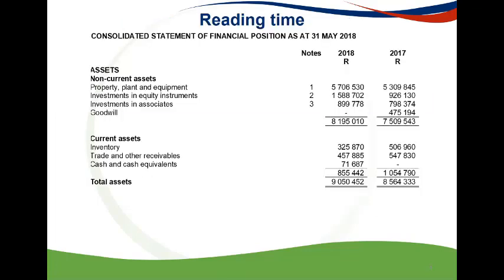During reading time, it is important to analyze the financials given before rushing through to the typed information. First, look at the asset section of the financials. Divide the line items to assign under which activity on the cash flow they would be disclosed. Remember, even though this seems easy, students tend to confuse line items as you may become distracted when writing time starts. Incorrect classification in this regard is a common error and may be avoided if these issues are dealt with during reading time.